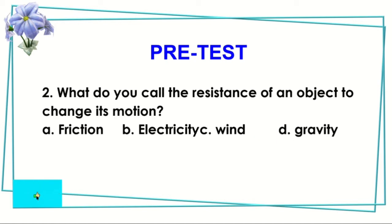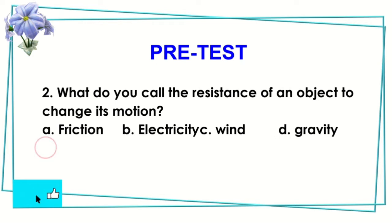Question number two: What do you call the resistance of an object to change its motion? Is it A. Friction, B. Electricity, C. Wind, or D. Gravity? The answer is letter A, which is friction.